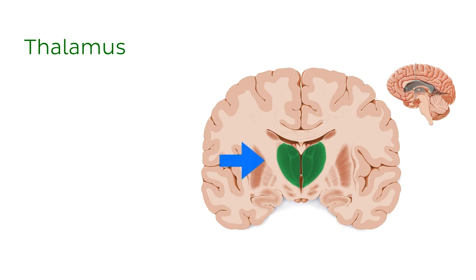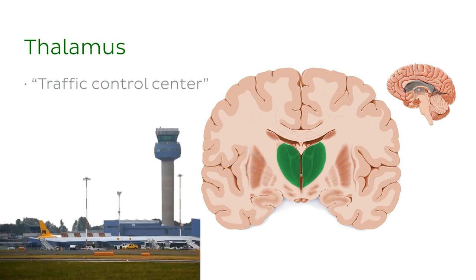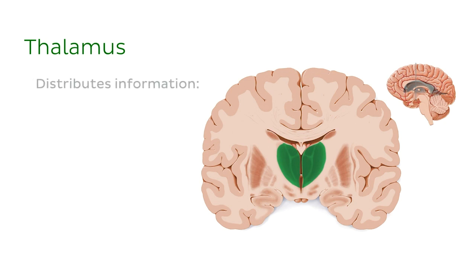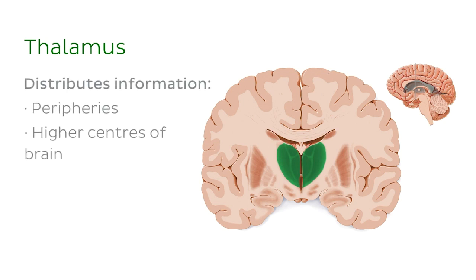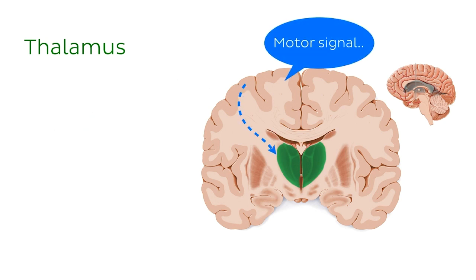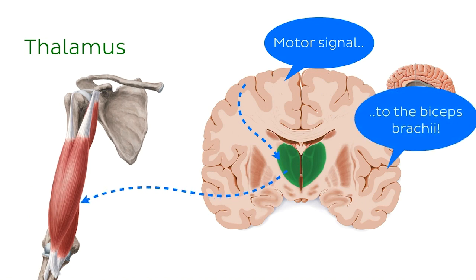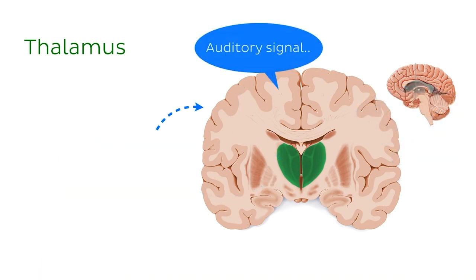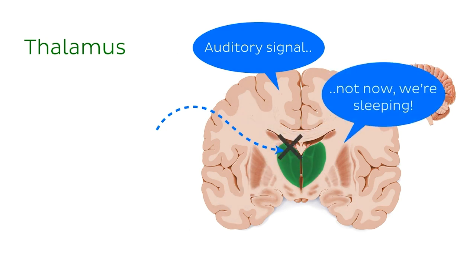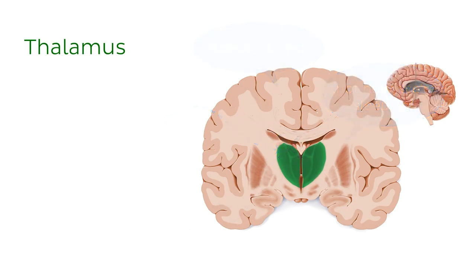The thalamus, shown in green here, is the largest nucleus in the brain. It is often nicknamed the traffic control centre of the brain. It receives and distributes information between the peripheries and higher centres of the brain, such as the cerebral cortices. Basically, it tells many of our nerves where they should go, or when they can and can't go. It is therefore involved in sensory and motor functions, in addition to sleep, consciousness, attention, and memory. The thalamus is bilateral in structure.